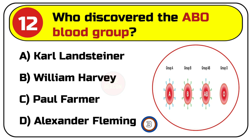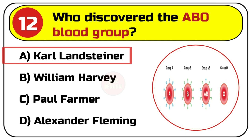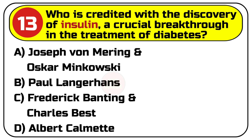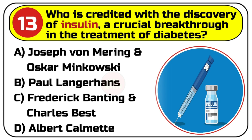Correct answer is A. Karl Landsteiner. Question number 13. Who is credited with the discovery of insulin, a crucial breakthrough in the treatment of diabetes? Options are: A. Joseph von Mering and Oskar Minkowski, B. Paul Langerhans.